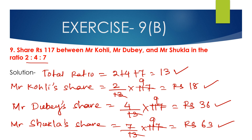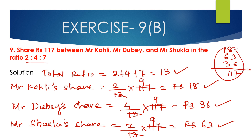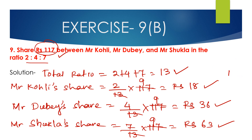To verify, if we add all the shares: 18 + 36 + 63 = 117 rupees, which equals the total amount. So our answer is correct. Sharing 117 rupees between Mr. Kohli, Mr. Dubai, and Mr. Sukla in the ratio 2:4:7 — Mr. Kohli gets 18 rupees, Mr. Dubai gets 36 rupees, and Mr. Sukla gets 63 rupees.